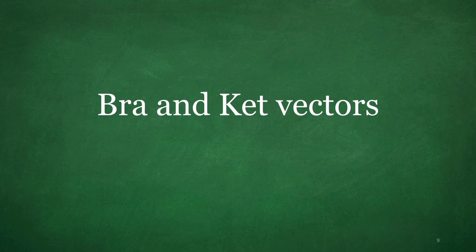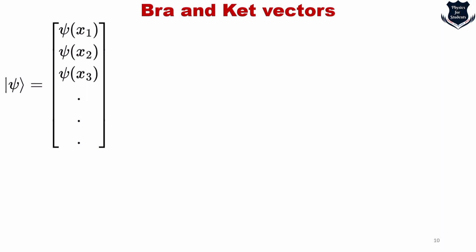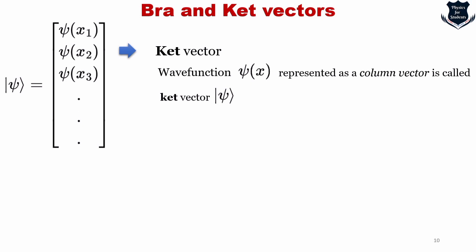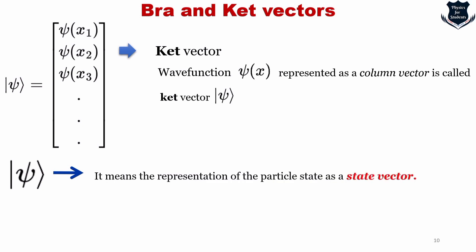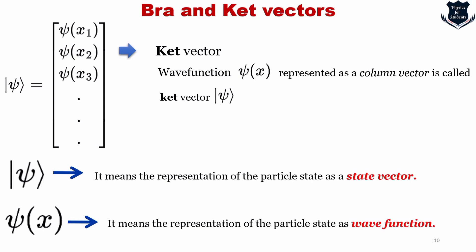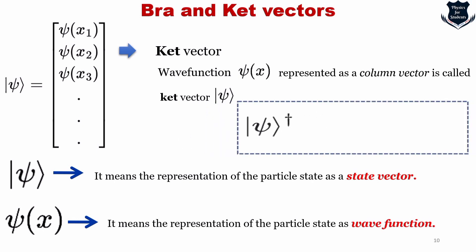Now we come to the definition of Bra and Ket vectors. In order to distinguish the description of a particle as a state vector from its description as a wave function, we write the state vector using Ket notation: a vertical bar followed by ψ and an angular bracket. The wave function ψ(x) is represented as a column vector called a Ket vector. When we see the Ket notation, it means the representation of the particle as a state vector; ψ(x) on its own means the representation as a wave function.